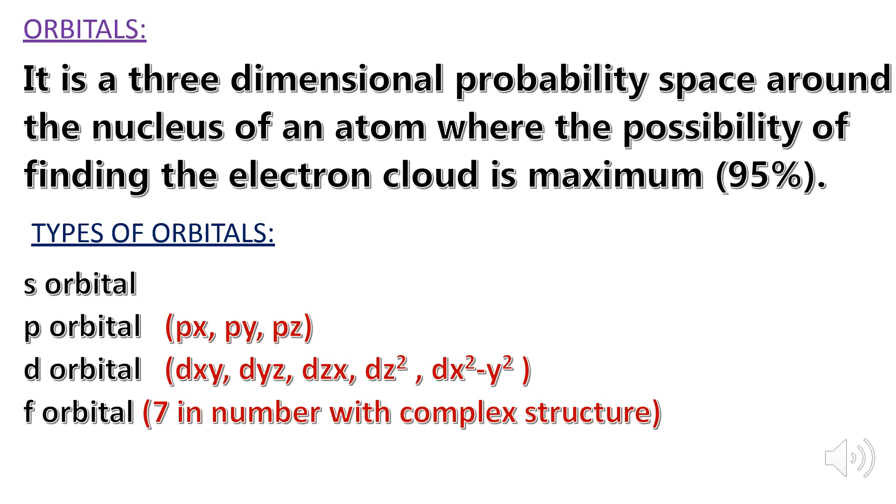Types of orbitals. S orbital is spherical in shape and is one in number. P orbitals are three in number that are Px, Py and Pz.